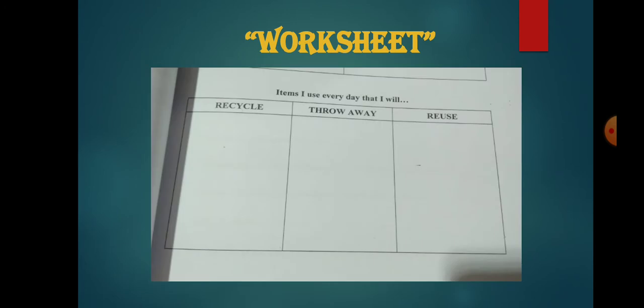Now move on to the next question of this page: items I use. There are three columns you can see - recycle, throw away, or reuse. We use on daily basis which we recycle, throw away, or reuse. Just like when I say throw away - now we use surgical masks, you use surgical gloves.